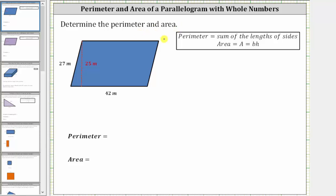Determine the perimeter and area of the given parallelogram. To begin, the opposite sides of a parallelogram have the same length, which means if this side has a length of 27 meters, this side also has a length of 27 meters. And if this side is a length of 42 meters, this side also has a length of 42 meters.